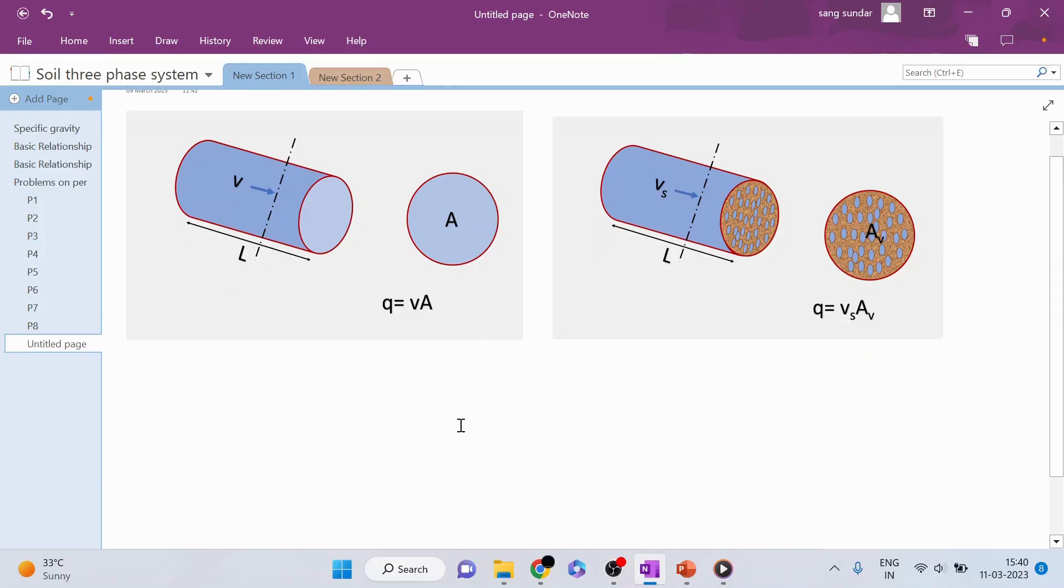We have discharges in two conditions. One, considering the entire cross sectional area, and the other considering the flow happening only through the void spaces. This is Q equals VA, and this one is Q equals Vs times Av. Let us equate them. VA is equivalent to Vs times Av.